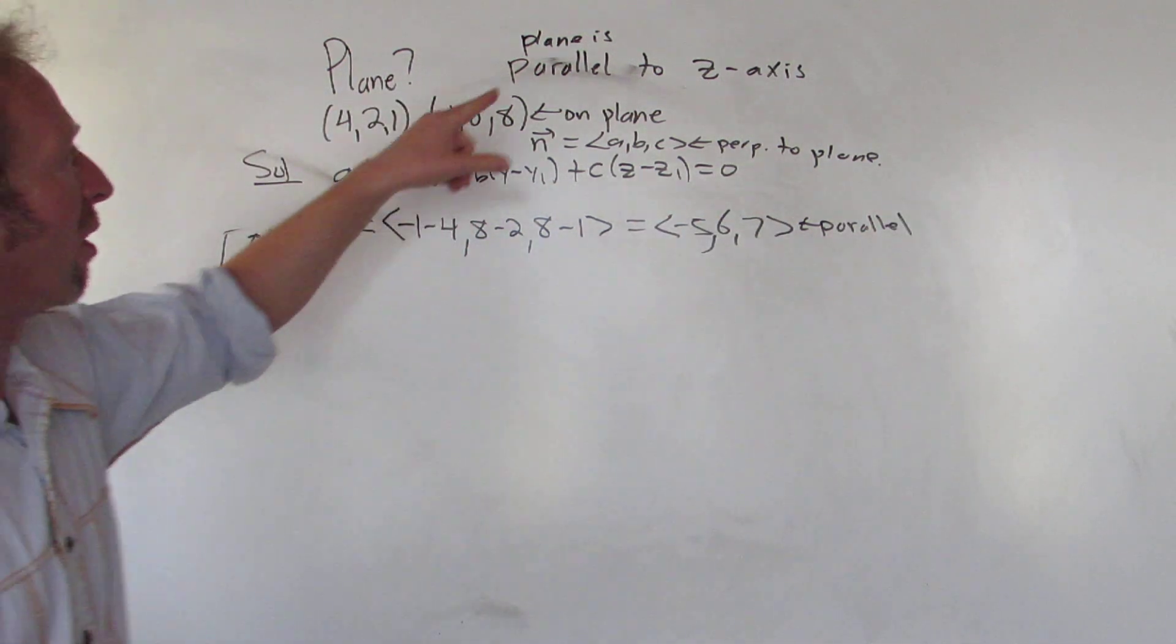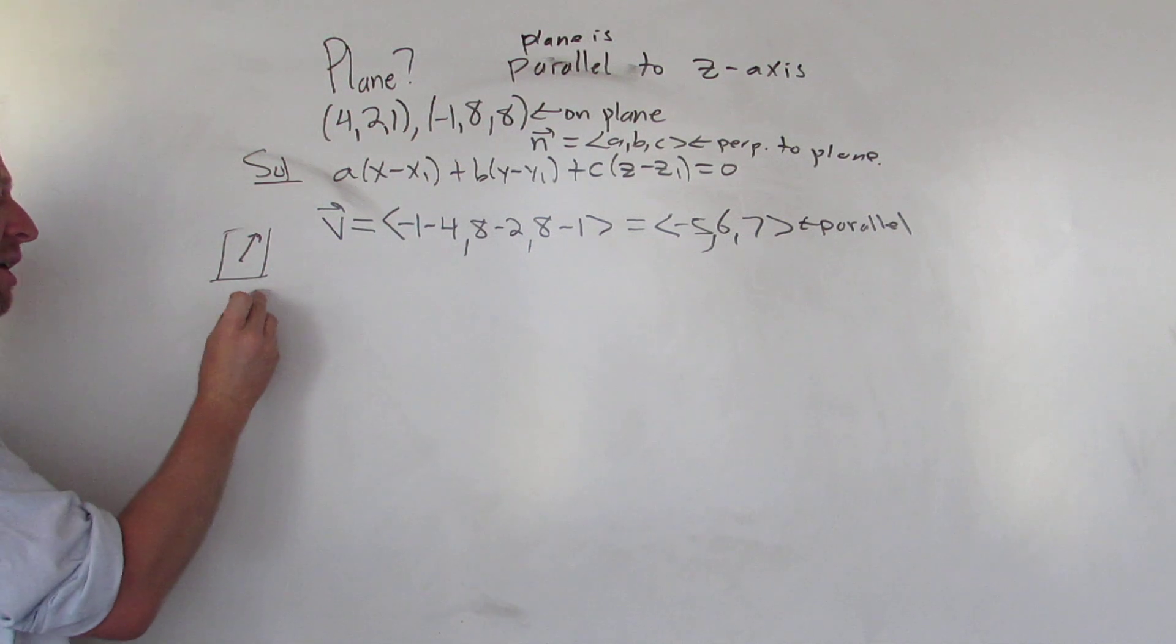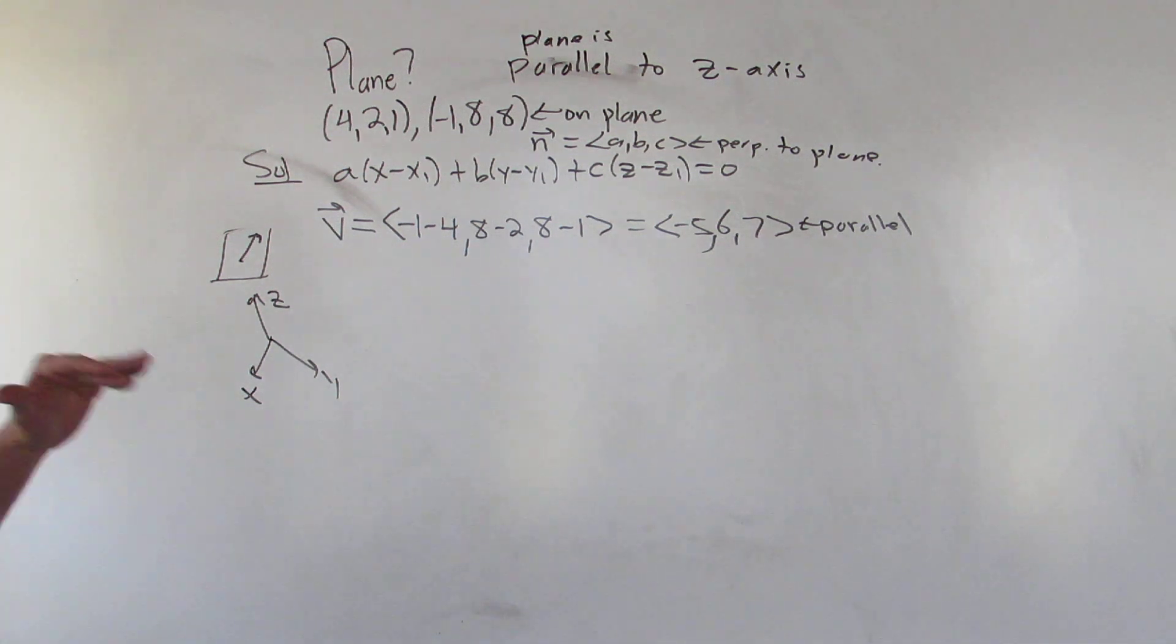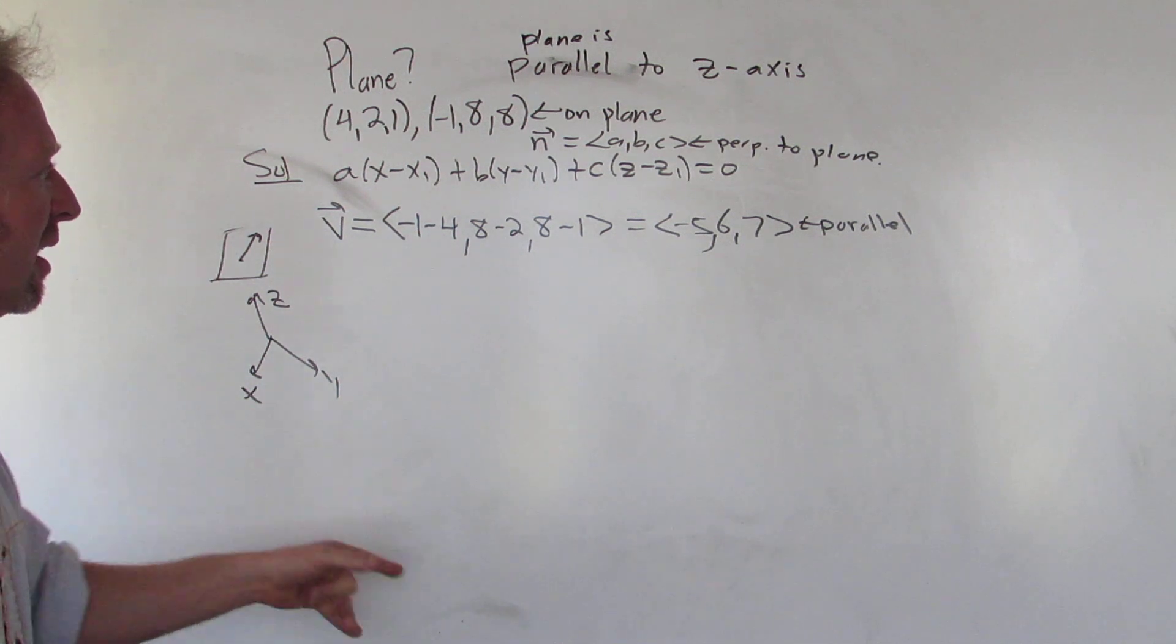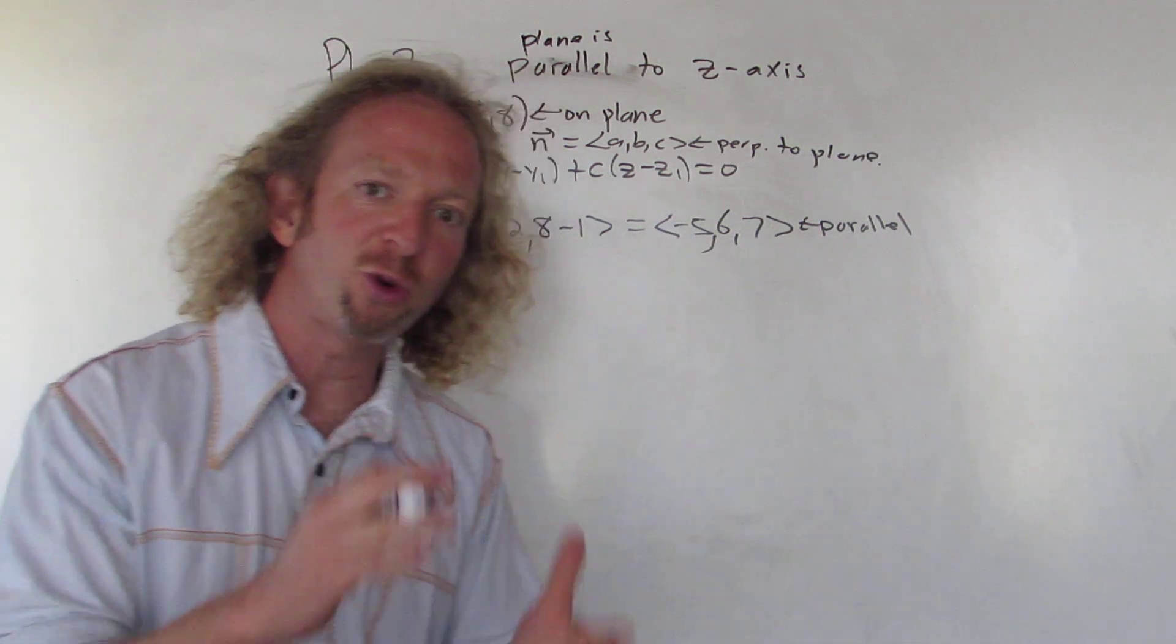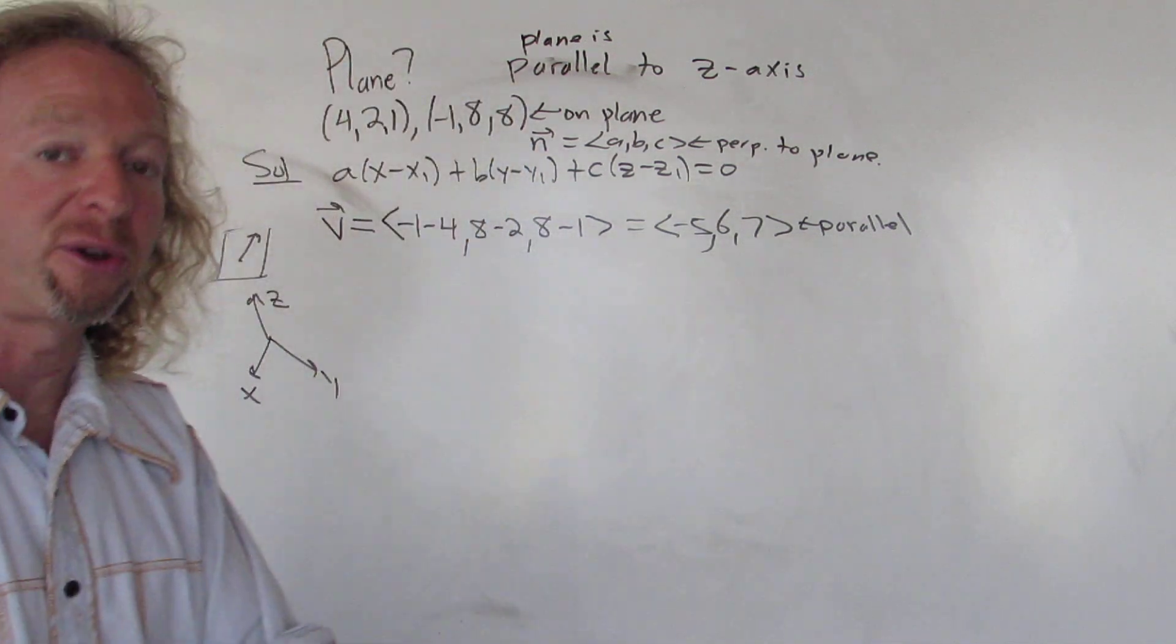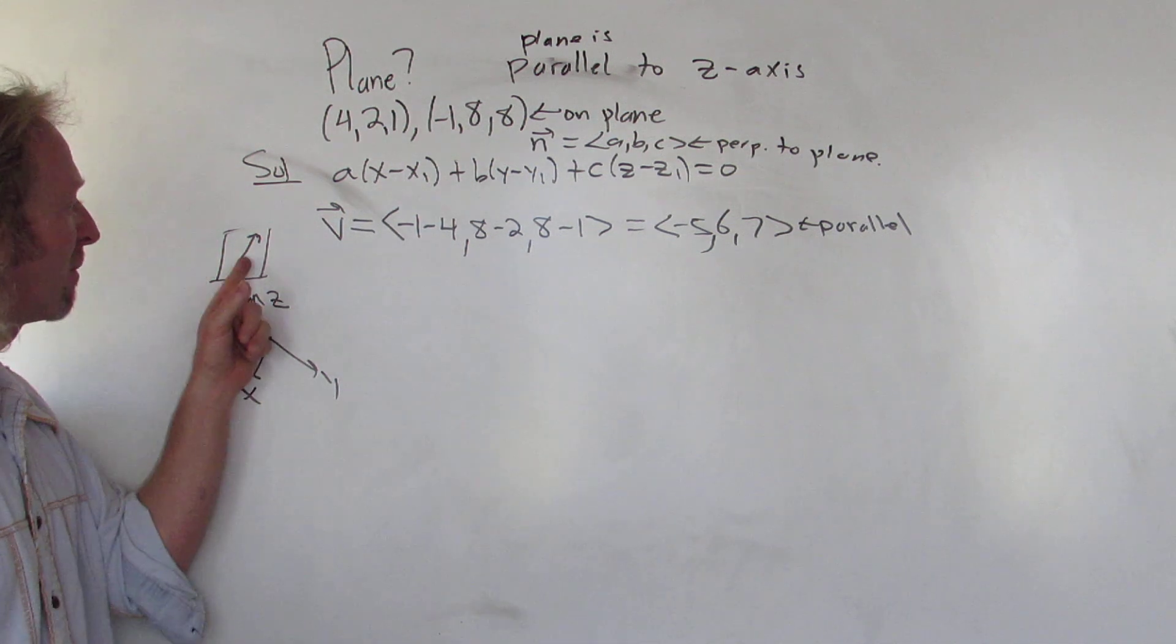Okay, to our plane. We're also told our plane is parallel to the z-axis. Again, thinking 3D here. So here's z, here's x, here's y. So our plane is parallel to this axis. So if we can find another parallel vector and then we have this parallel vector, we have two parallel vectors. We can take the cross product.